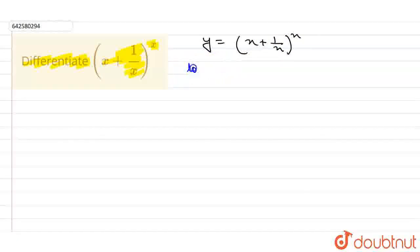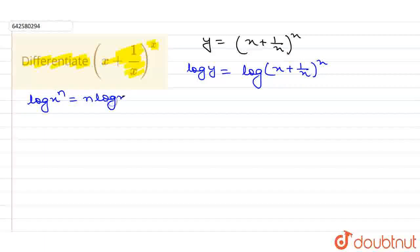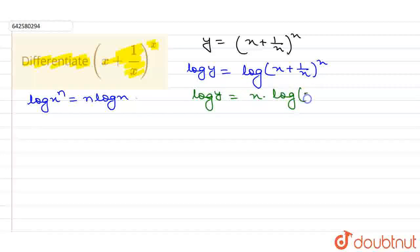So I can write log y equals log of (x + 1/x) whole power x. Now, if we have log of x power n, then we can write it as n·log x. By using this property of log, I can write: log y = x · log(x + 1/x).